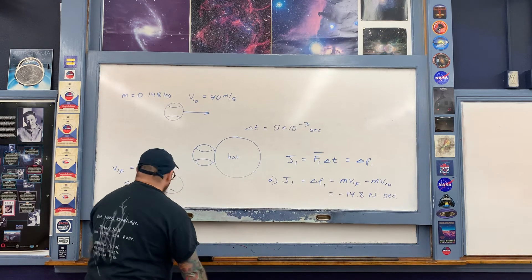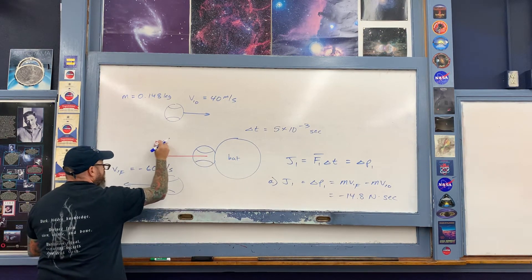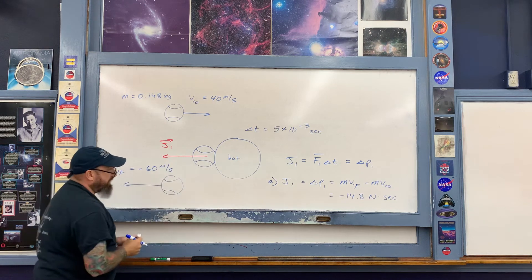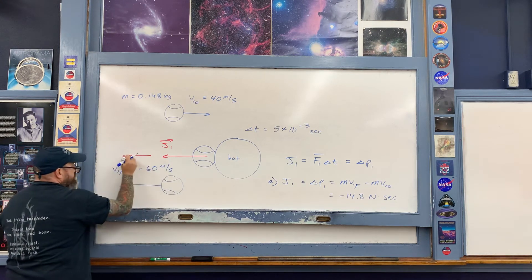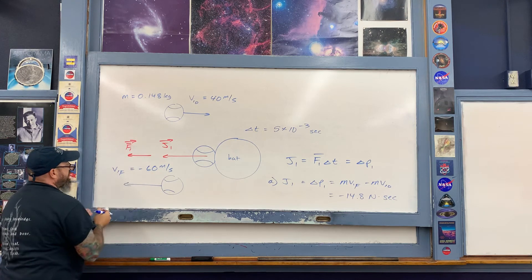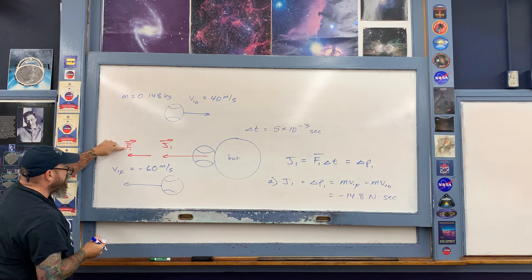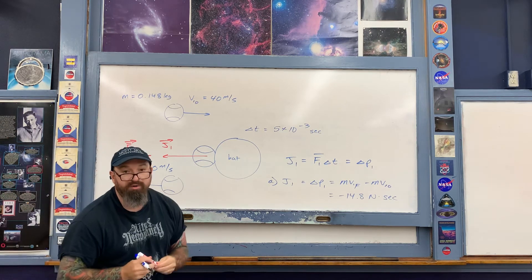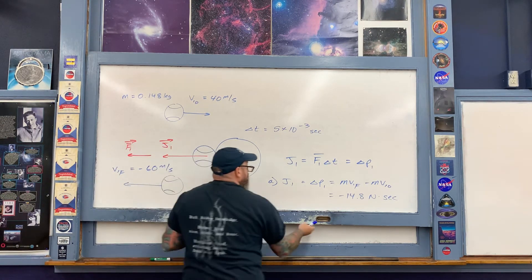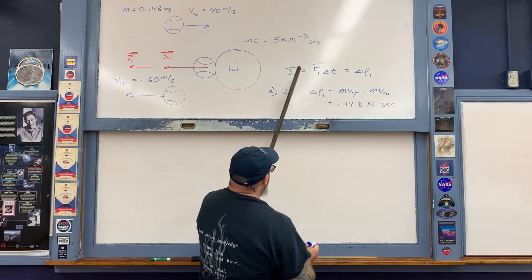This will be a negative number because the J vector exerted upon the ball points to the left. The J vector is always in the same direction as the force vector. While the bat is in contact with the baseball, here is the force vector J₁ exerted upon the ball, in the same direction as the average force vector F₁. That's what's going to be asked for in part B.